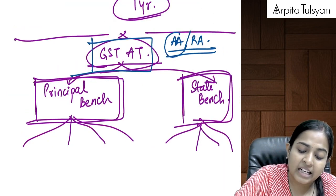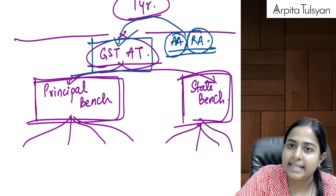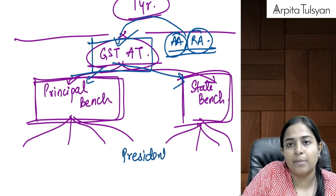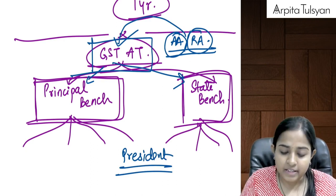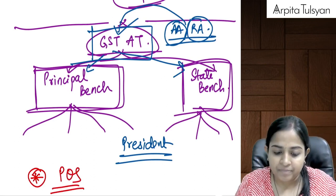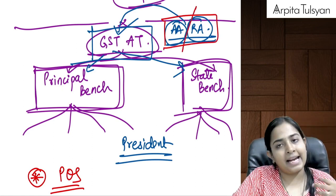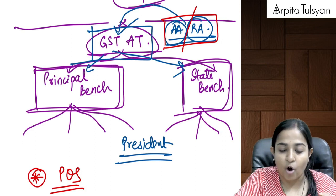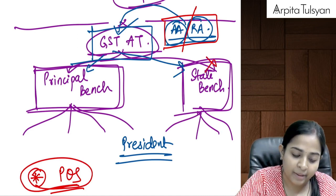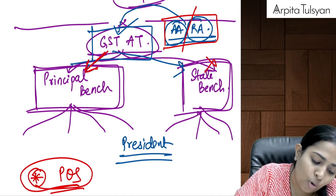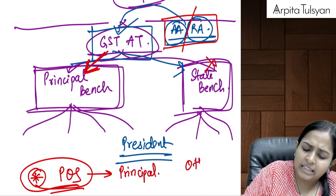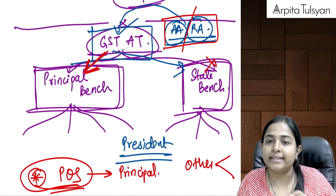Whenever any person is aggrieved by an order passed by the AA or RA, the matter goes to GSTAT — either principal bench or state bench, decided by the president. If the dispute relates to place of supply, it can only go to the principal bench, since IGST provisions apply. Other matters can go to either bench.